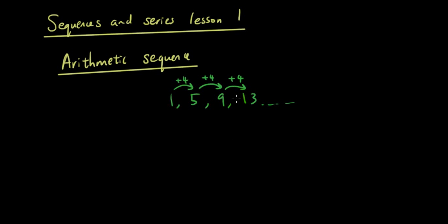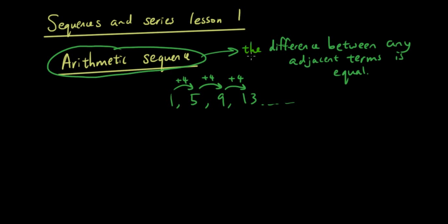Now when this occurs, you have what we call an arithmetic sequence. So you can say that in order for a sequence to qualify as an arithmetic sequence, the difference between any adjacent terms is equal.